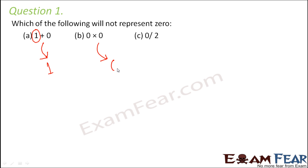Zero into zero — anything multiplied by zero is always zero, so this represents zero. Zero divided by two — zero divided by anything is also zero, and anything divided by zero is always not defined.